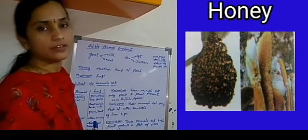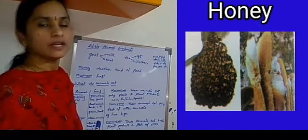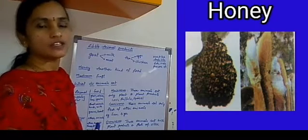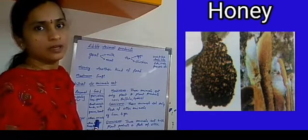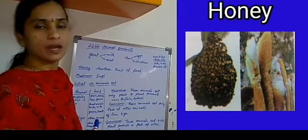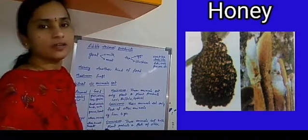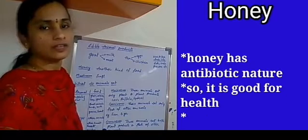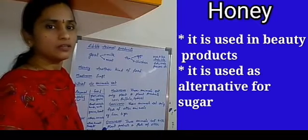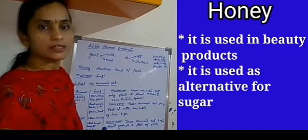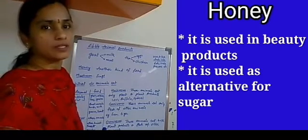Where do we get honey from? From honey bee hives. Honey bees collect nectar from flowers during the flowering season and store it in their hives — their homes — for future consumption. When man finds these honey bee hives on trees, he collects the honey. Honey is a very good health-benefiting food with good health benefits. It is used in Ayurvedic medicines and in beauty products.